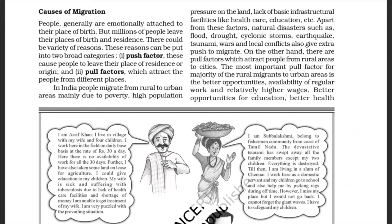Causes of Migration: People are generally emotionally attached to their place of birth, but millions of people leave their places of birth and residence. There could be a variety of reasons, which can be put into two broad categories. First, push factors — these cause people to leave their place of residence or origin. In India, people migrate from rural to urban areas mainly due to poverty, high population pressure on land, and lack of basic infrastructural facilities like healthcare and education. Apart from these, natural factors such as floods, drought, cyclonic storms, earthquakes, tsunamis, wars, and local conflicts also give extra push to migrate.